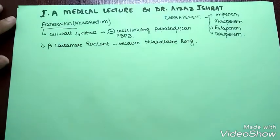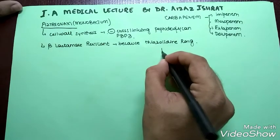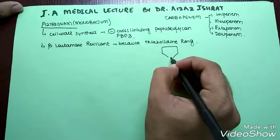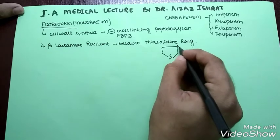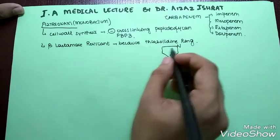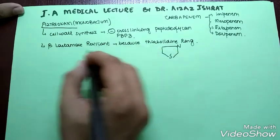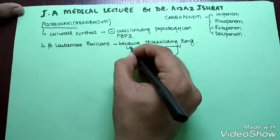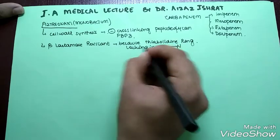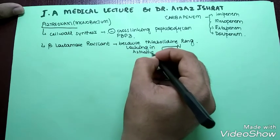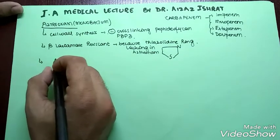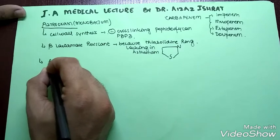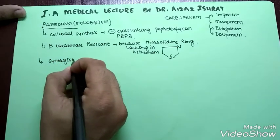Now comes the good thing: it is beta-lactamase resistant. Why? Because it lacks the thiazolidine ring. What is the thiazolidine ring? We all know the Superman symbol — I draw the 'S' over here. In this ring it is sulfur, forming the ring of thiazolidine, and it is lacking in aztreonam. That is why it is resistant to beta-lactamase.